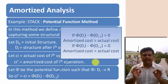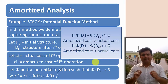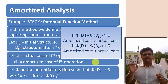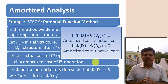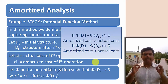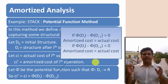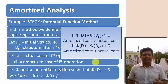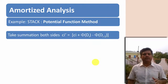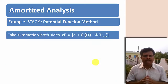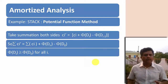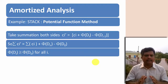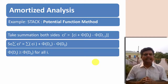If φ(Di) − φ(Di−1) is greater than 0, then amortized cost is greater than actual cost. If φ(Di) − φ(Di−1) is less than 0, then amortized cost is less than actual cost. Taking summation on both sides, φ(Di) will always be greater than or equal to φ(D0).